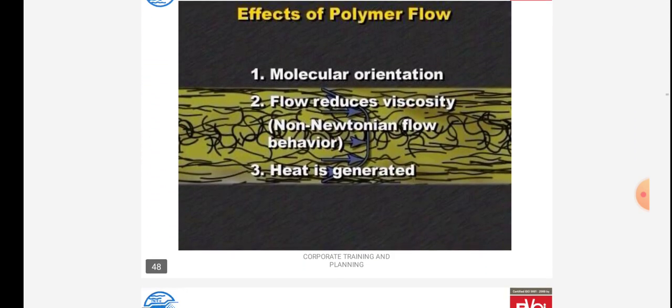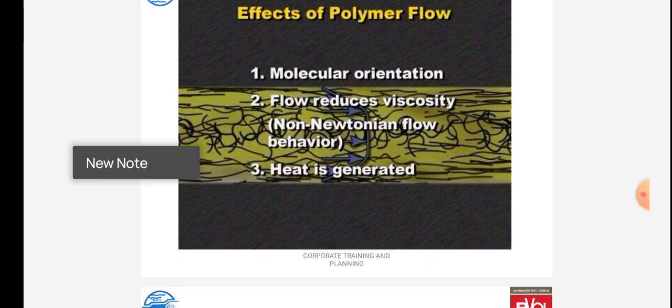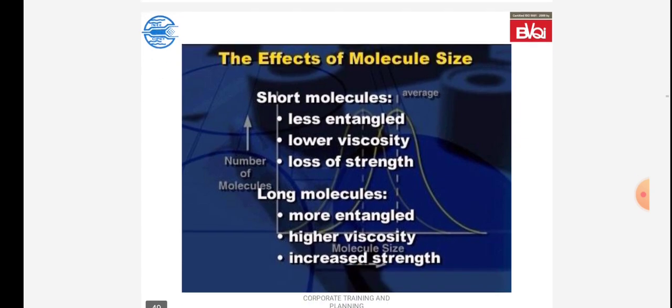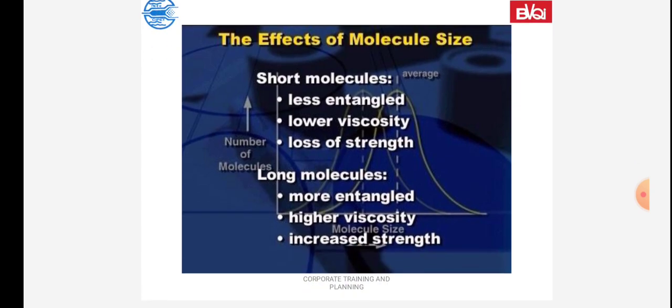Effect of polymer flow: molecular orientation — flow reduces viscosity in non-Newtonian flow where heat is generated. Effect of molecule size: short molecules are less entangled, resulting in low viscosity and loss of strength. Long molecules are more entangled, resulting in higher viscosity and increased strength.